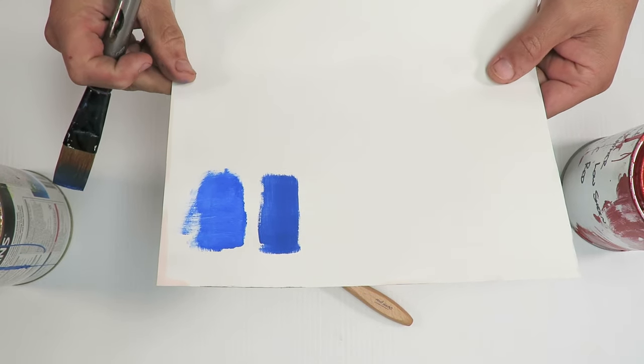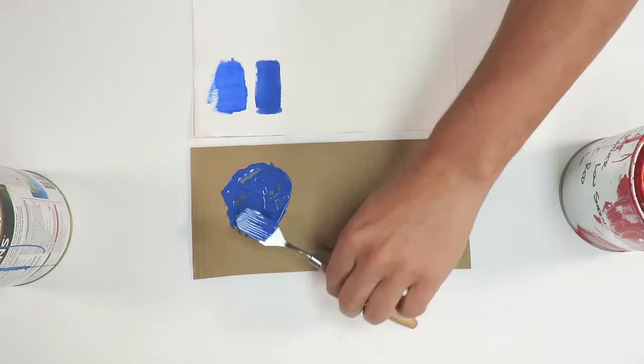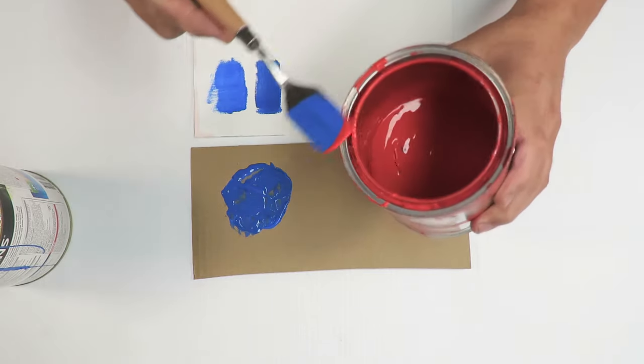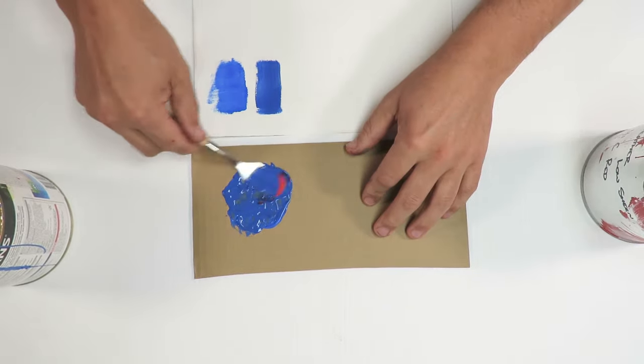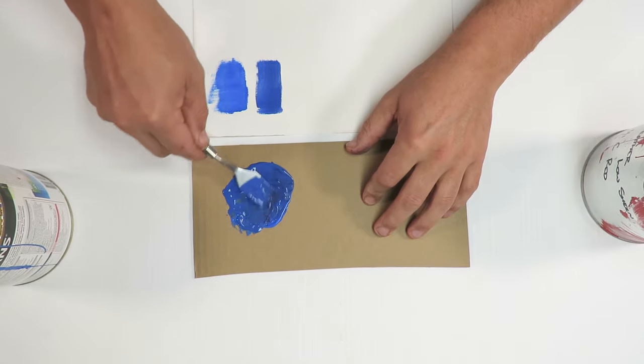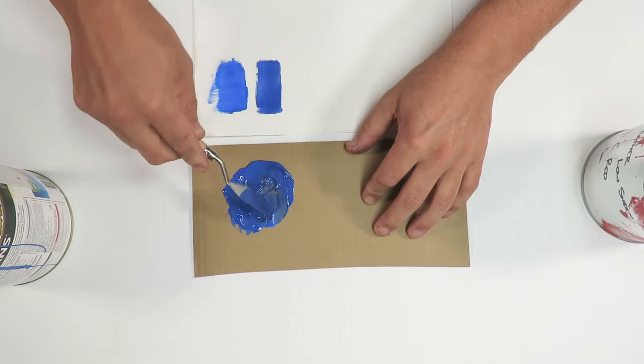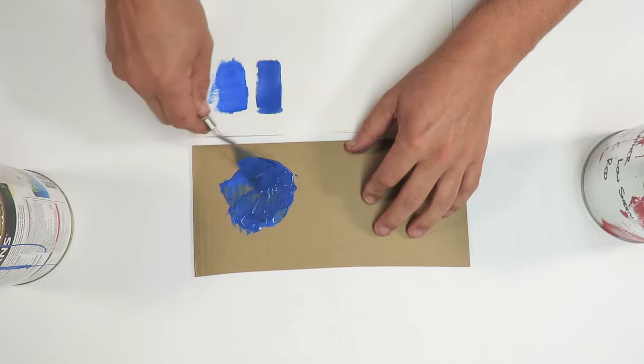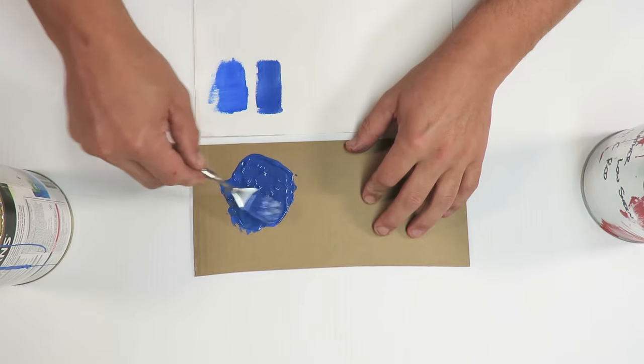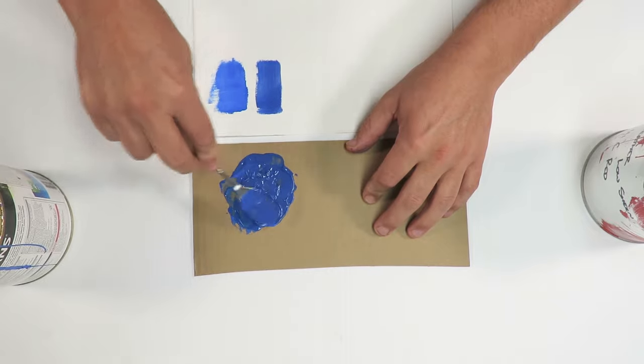So we're going to add a little bit more red and see if we can get a bit darker. See how far we can go. Just a little bit more on the palette knife. Let's mix it up. That's good and mixed up. It's a lot darker now.